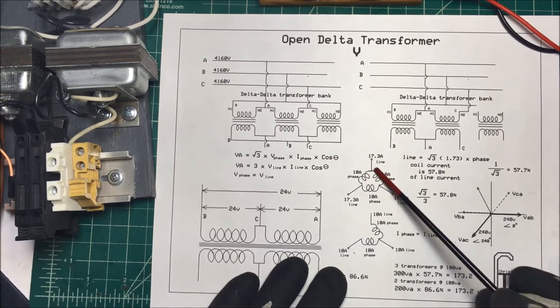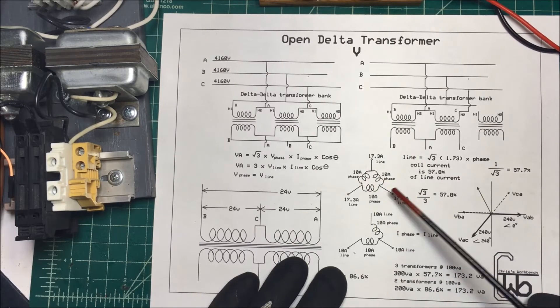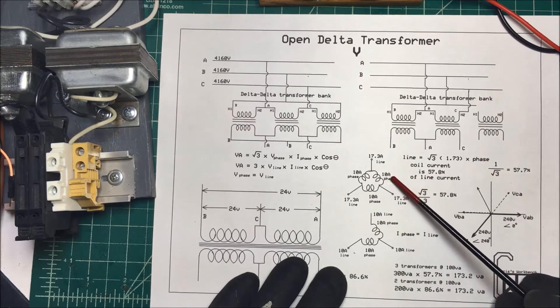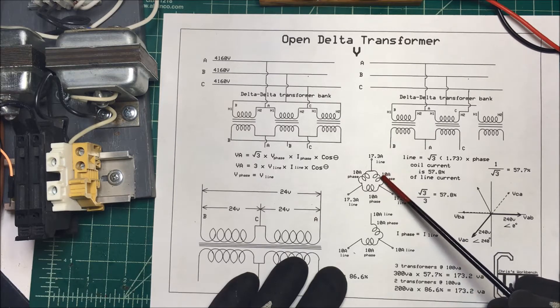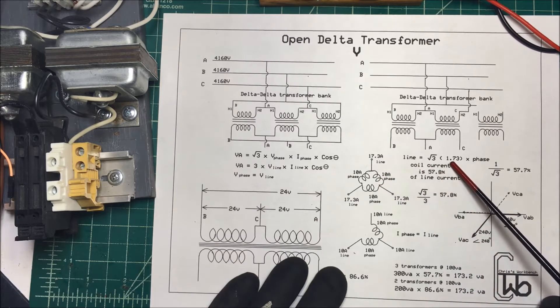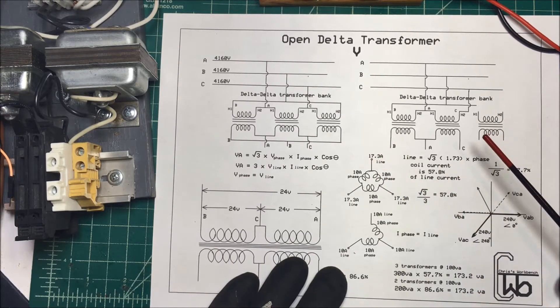So here it is here. This is just a simple diagram of this delta and that's why we call the delta system. Now if your phase current here in the coil happens to be 10 amps, then you take 10 times the 1.73 and you get 17.3 amps on your line here.